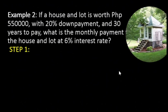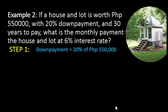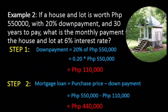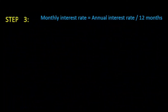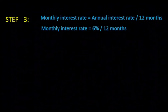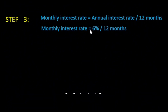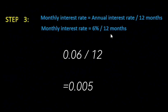Let's go back to the same problem. A house and lot worth 550,000 pesos with a 20% down payment, 30 years to pay, at a 6% interest rate — what is the monthly payment? Step 1: the down payment is 20% of 550,000 pesos, which equals 110,000 pesos. Step 2: the mortgage loan is the purchase price minus the down payment, equal to 440,000 pesos. Step 3: calculate the monthly interest rate — annual interest rate divided by 12, so 6% divided by 12. Converting 6% to decimal gives 0.06, and 0.06 divided by 12 equals 0.005.